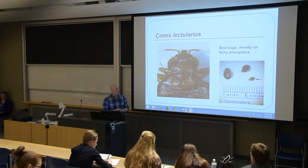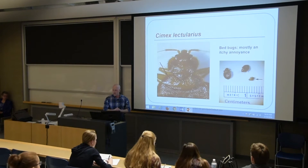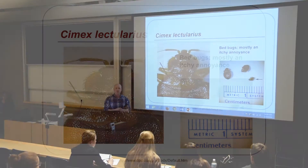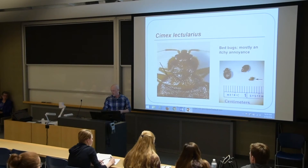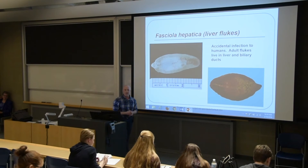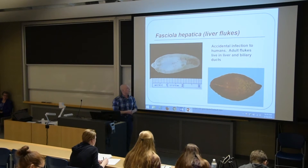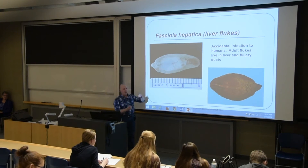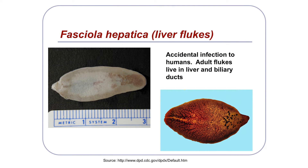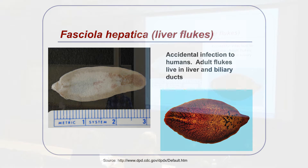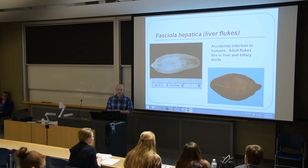Here's one you may not think of as a parasite — bed bugs. They're mostly an itchy annoyance and not very pretty. And here's the last one: a liver fluke. They're fairly large, and humans become infected accidentally. What happens is the parasite makes its way to the liver and the biliary ducts, where they can live for a certain amount of time.